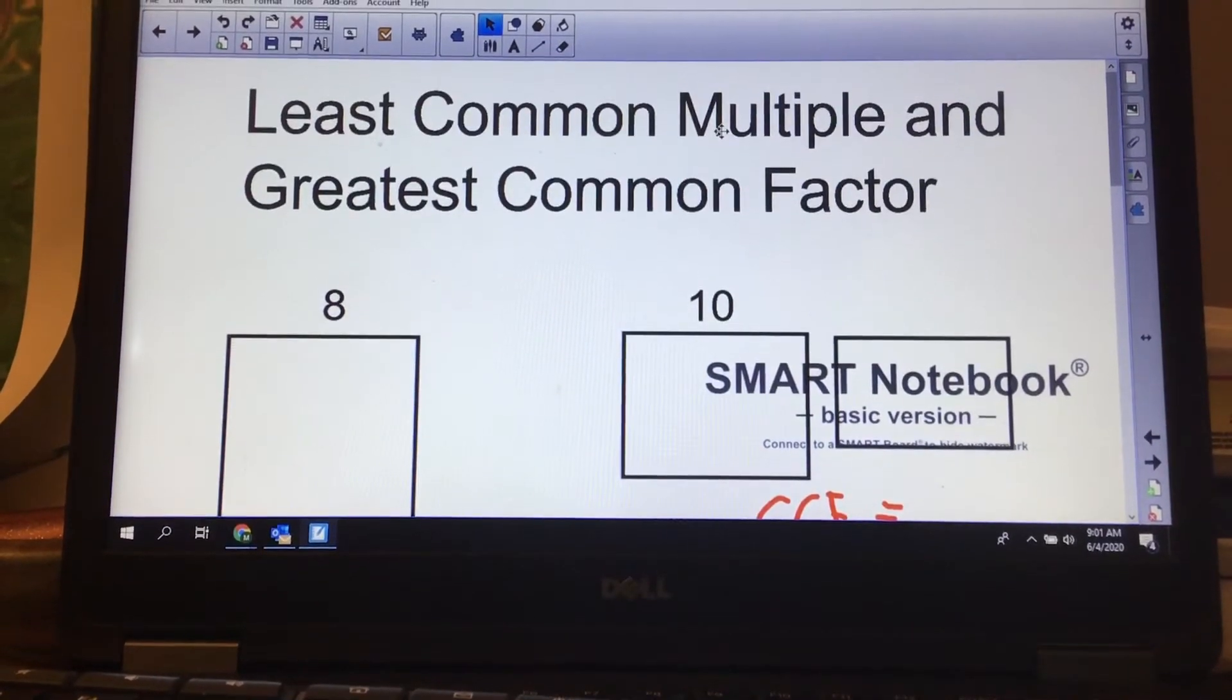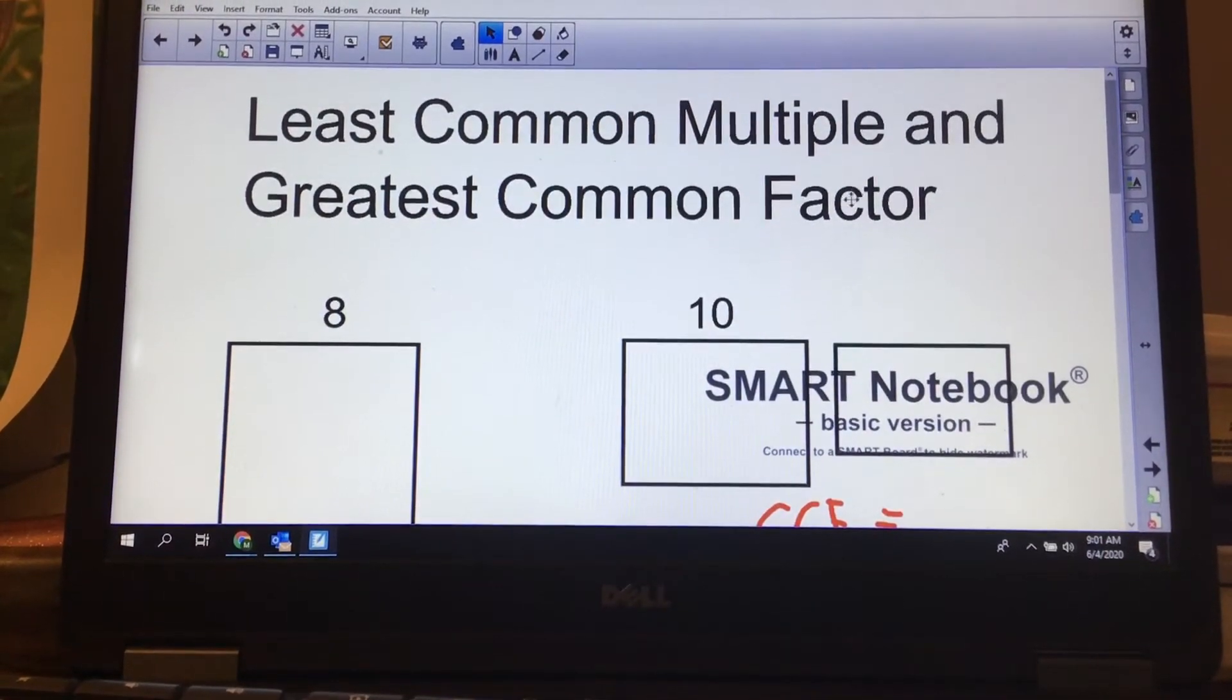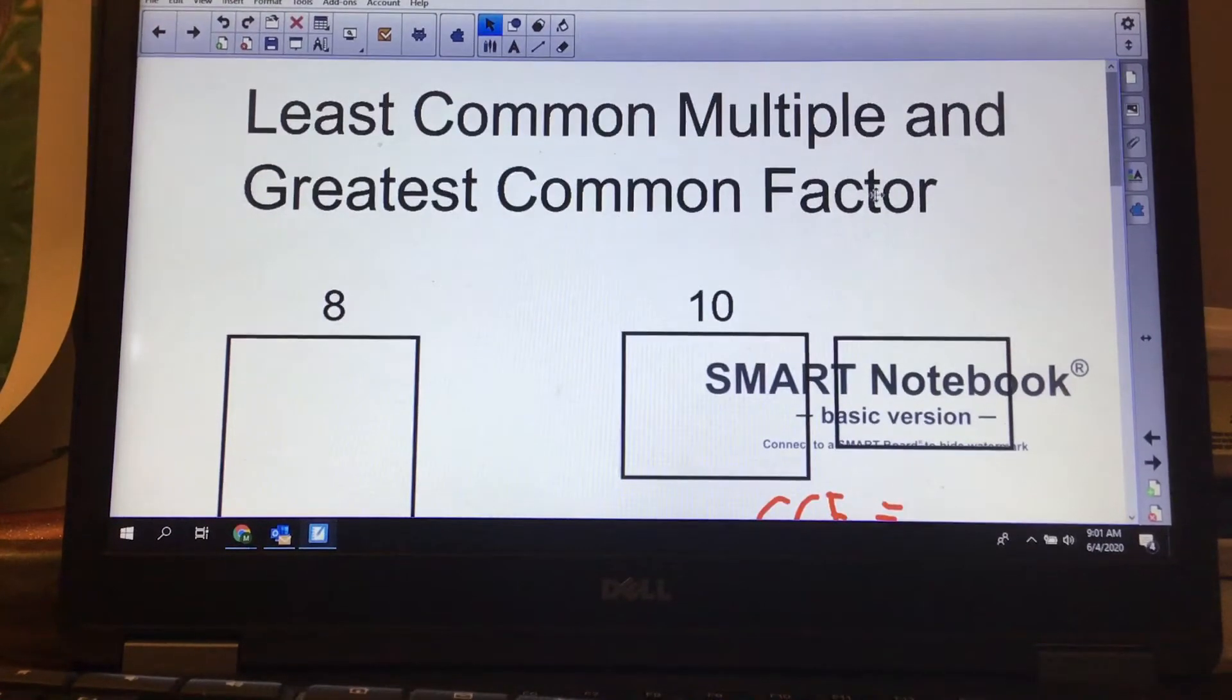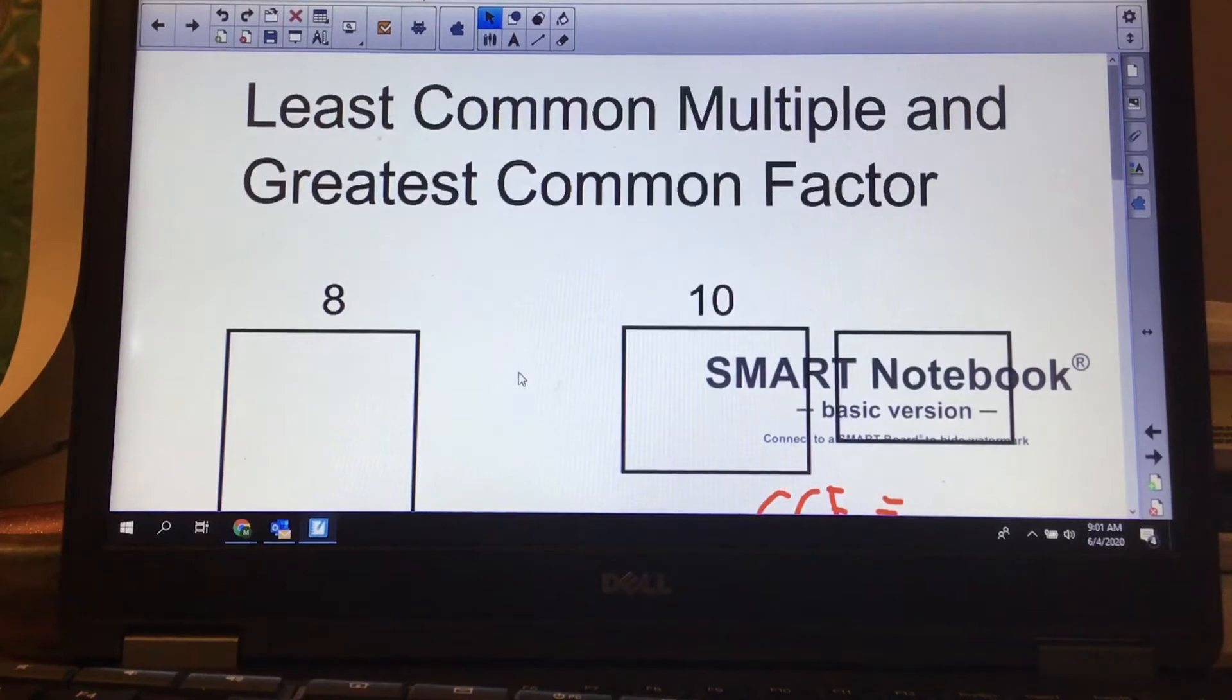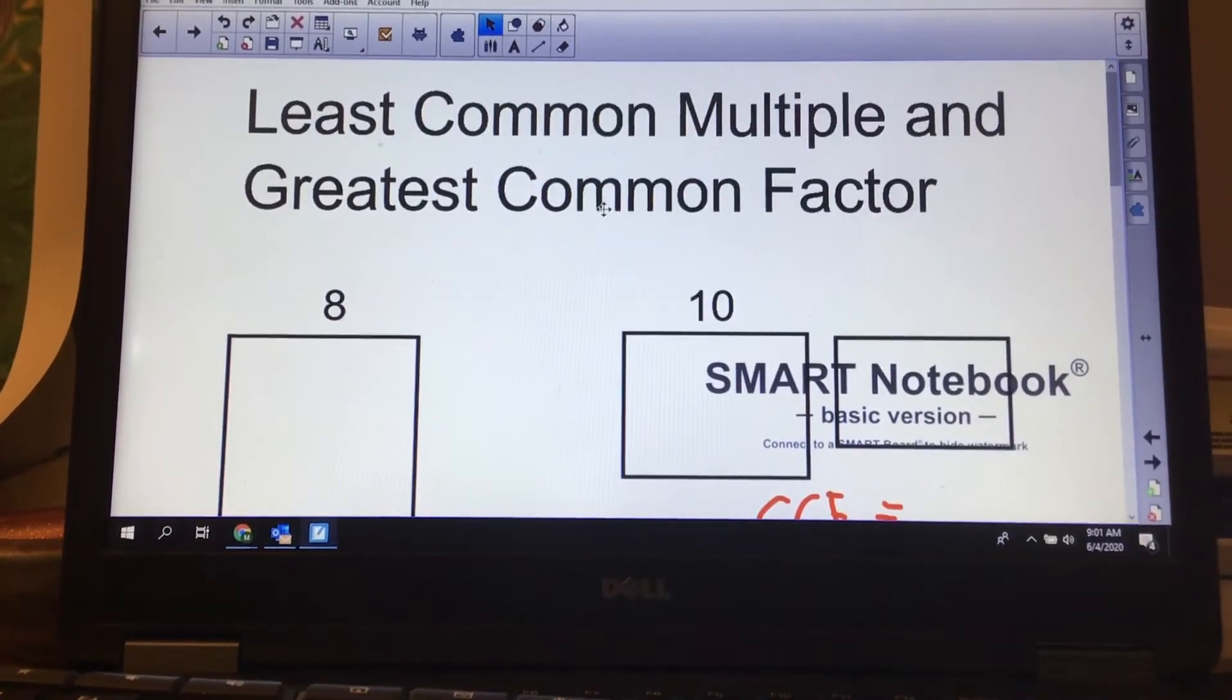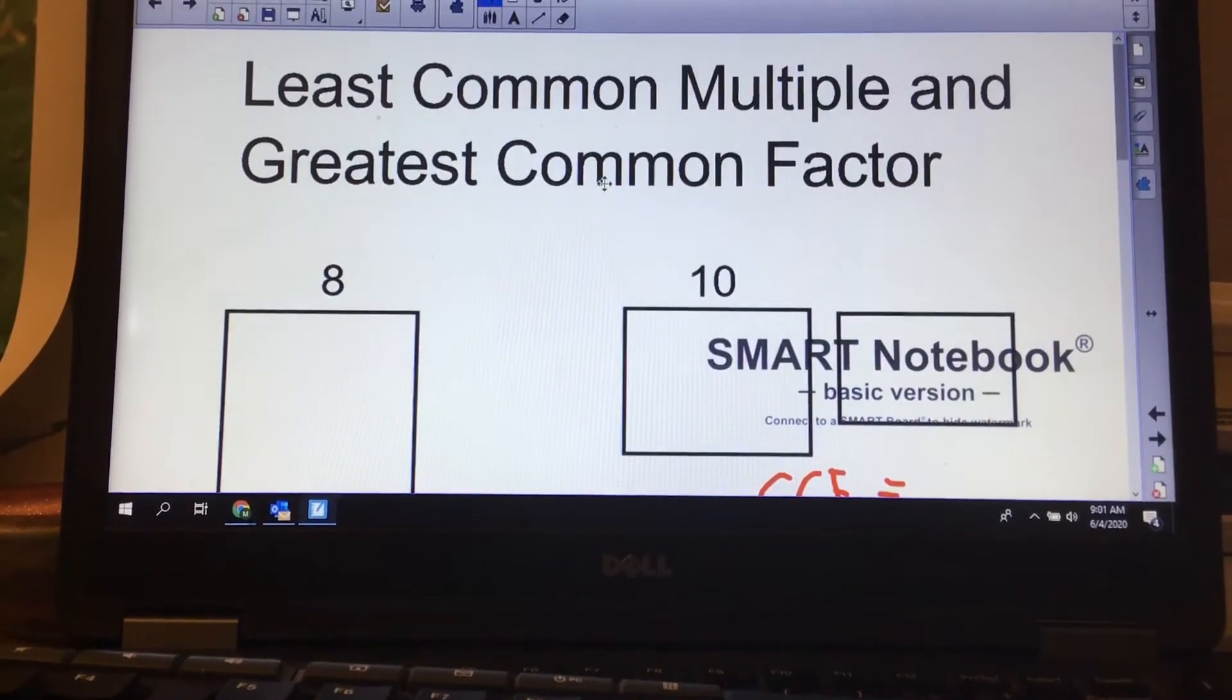Multiples are like 2, 4, 6, 8, 10. They're the multiples of 2. Factors of a number like 6 would be 2 and 3 because 2 times 3 makes 6. 1 and 6 also would be factors.